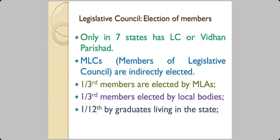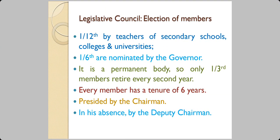Only in seven states can the Legislative Council or Vidhan Parishad be found. The members are known as Members of Legislative Council (MLCs), and they are not directly elected — they are indirectly elected. One-third of the members are elected by the MLAs. One-third are elected by local bodies. One-twelfth are elected by graduates living in the state, and a similar number by teachers of secondary schools, colleges, and universities.